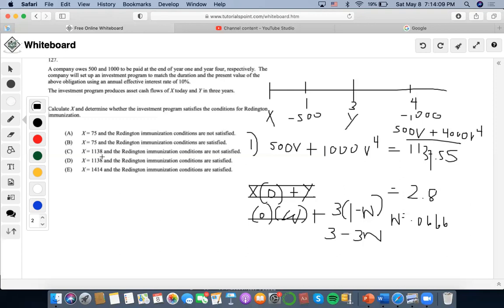So now once I get that solved, I can get rid of C, D, and E, so we know it's 75. Now we want to determine whether Reddington immunization conditions are satisfied. Well, we already have the first rule and the second rule handled, setting present values equal to each other and durations equal to each other.